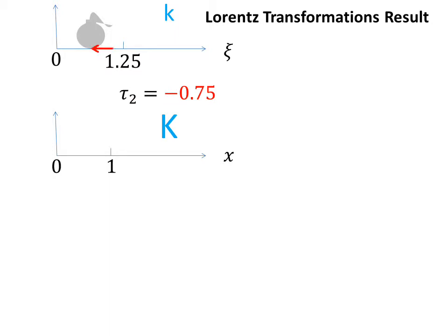Lorentz transformations, even more so, tell us that the two simultaneous flashes in stationary system K are represented as non-simultaneous flashes in the moving system k — let alone that even if the velocity of light is constant, their arrival at the trigger will be non-simultaneous.